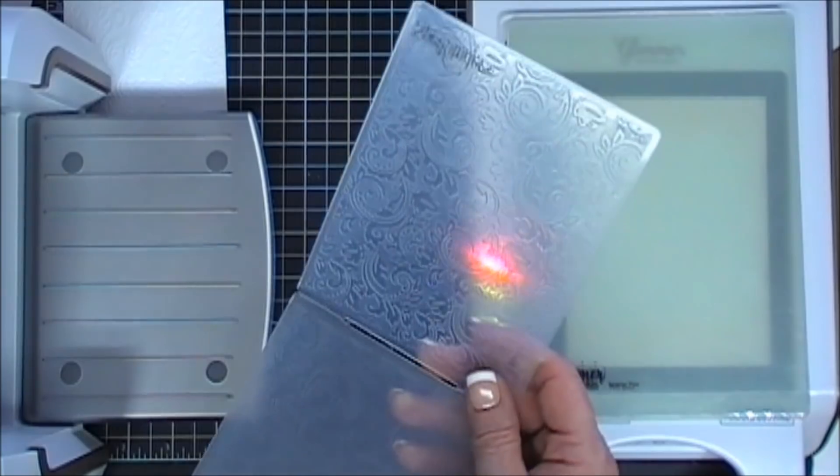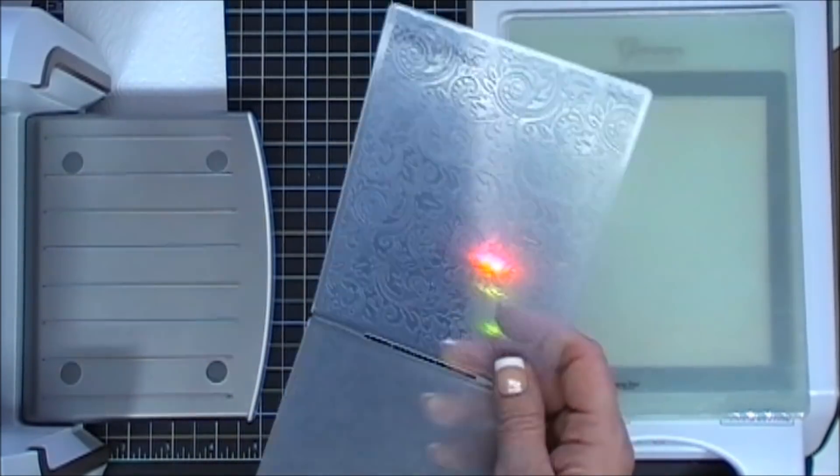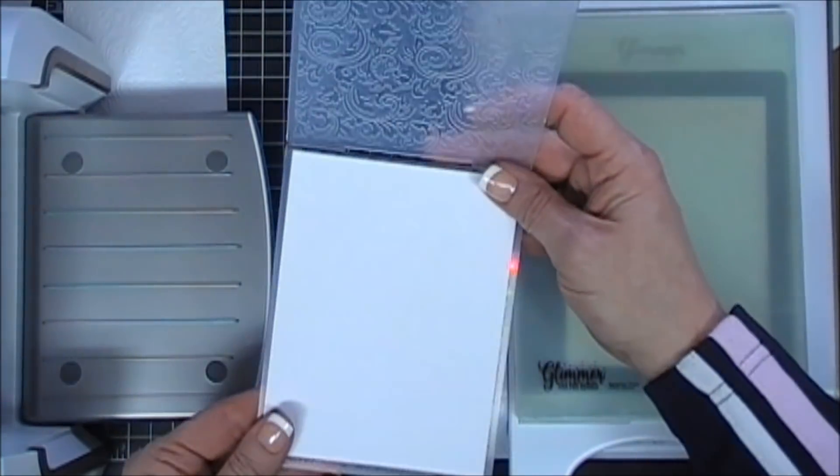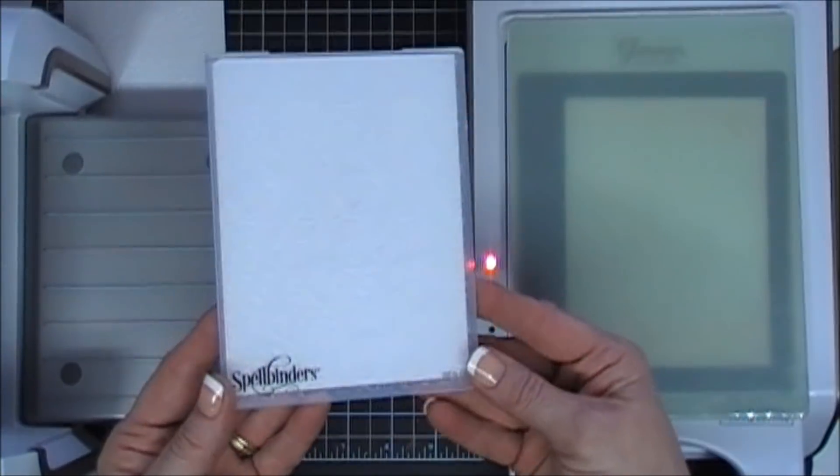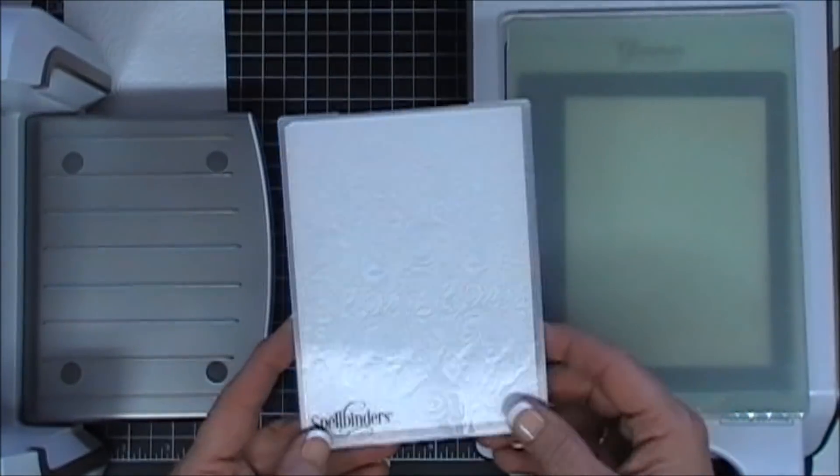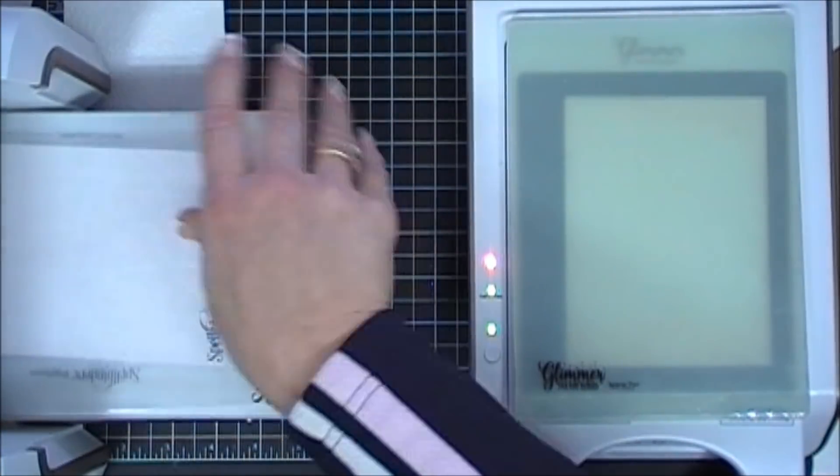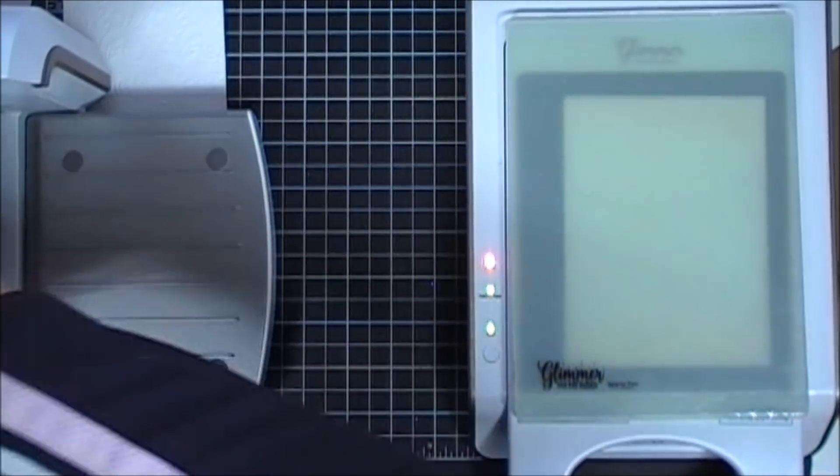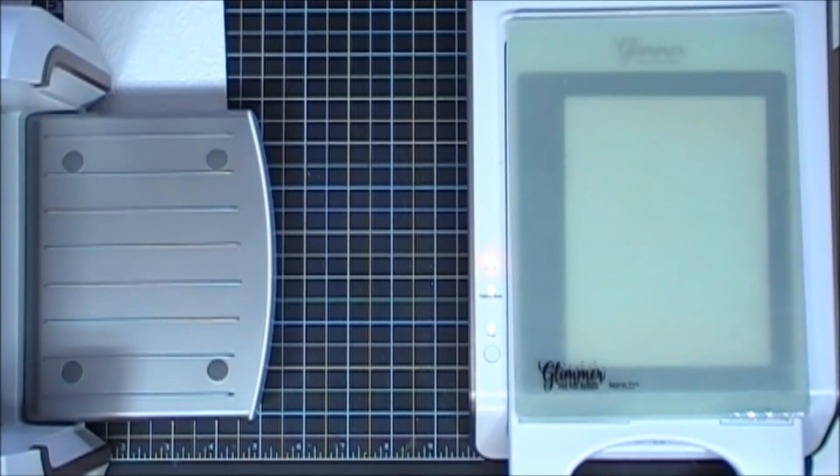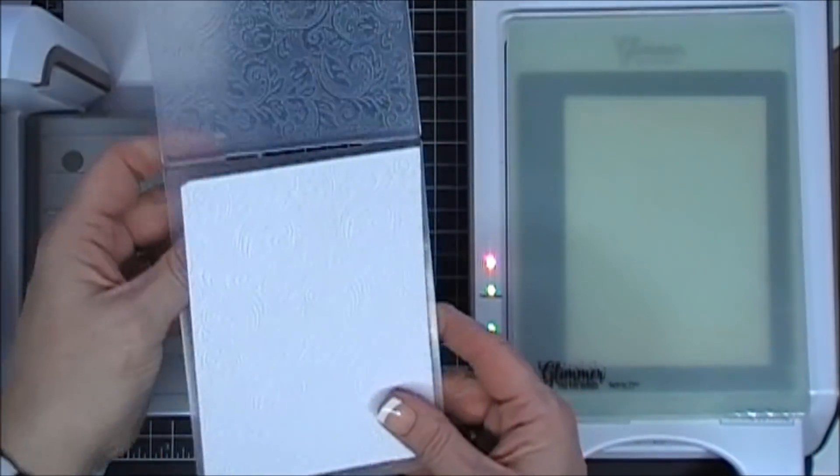I'm going to take a piece of white cardstock, add it to my embossing folder, and then we'll just run that through our Platinum 6 and emboss our background panel. I had to grab my Platinum 6 plates.